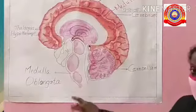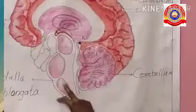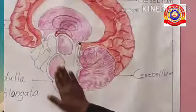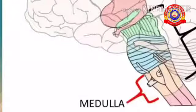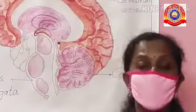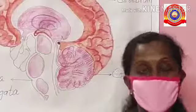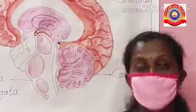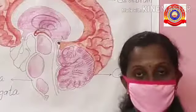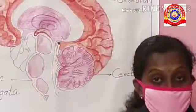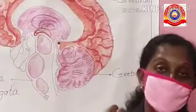The medulla oblongata is seen just below the cerebrum and is rod-shaped. Its function is to control involuntary activities — movements that do not take place by our will, such as heartbeat and breathing.